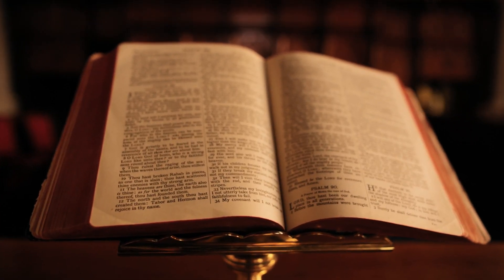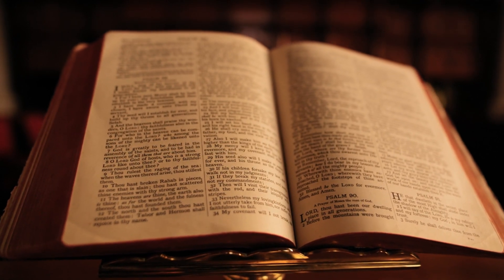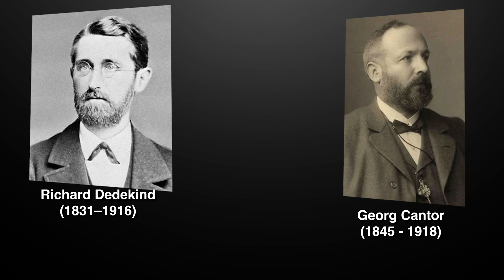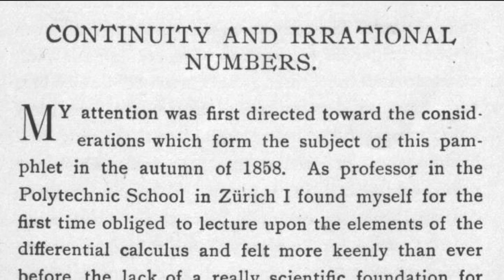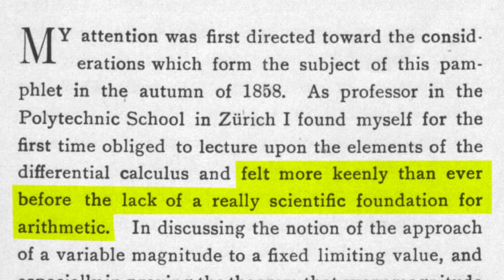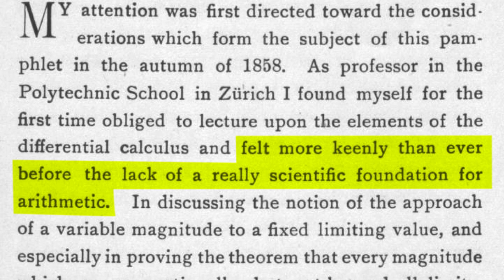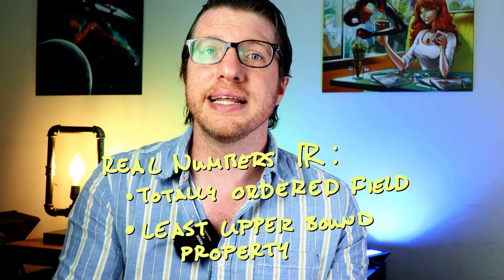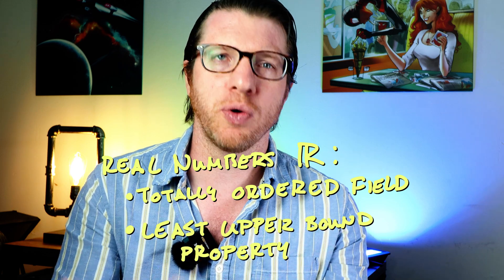To find a definition of the real numbers that makes 0.999... = 1 clear, we dive into research mathematics of the mid-19th century. Dedekind and Cantor both developed answers in the same year. Dedekind developed what he called Dedekind cuts, while Cantor took collections of sequences of rational numbers that look like they should converge but might not actually converge — like taking Archimedes' sequence of approximations of pi and declaring that to be pi. We call these Cauchy sequences.